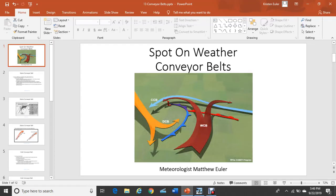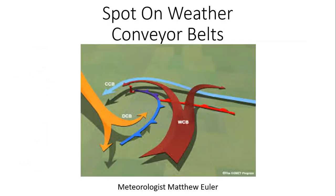Good afternoon, I'm Spot on Weather meteorologist Matthew Euler, and today as we come into the fall season and start getting into the late fall and winter, we start to notice more of a dynamic atmosphere setting up in the mid-latitudes. We'll start to see more of those mid-latitude cyclones, those baroclinic lows, and frontal systems associated with those lows moving through the mid-latitudes across the United States. When we're looking at these baroclinic lows and mid-latitude cyclones, which cause the rain and snow across the United States during the fall and wintertime.